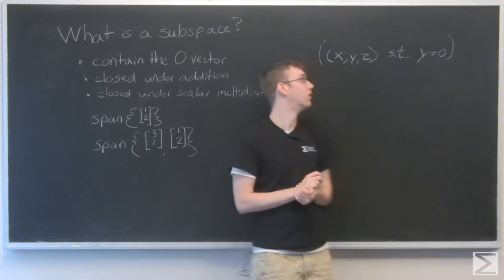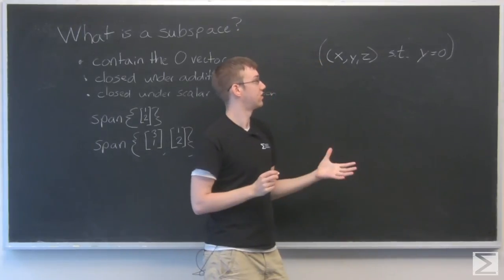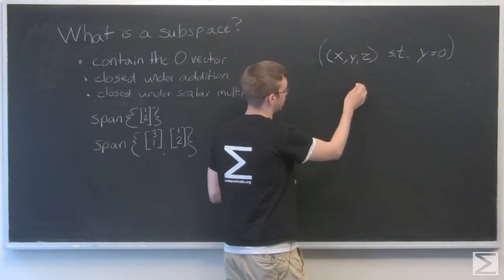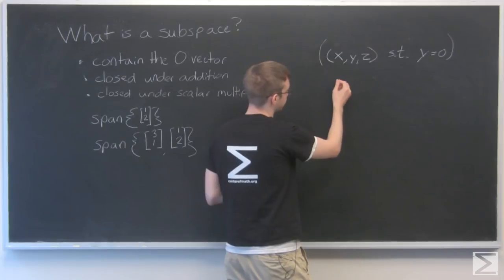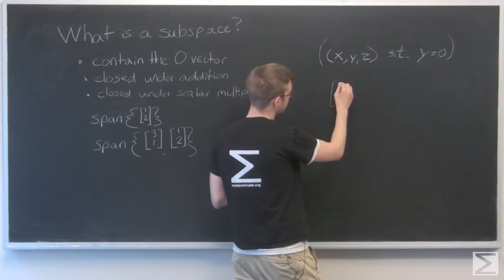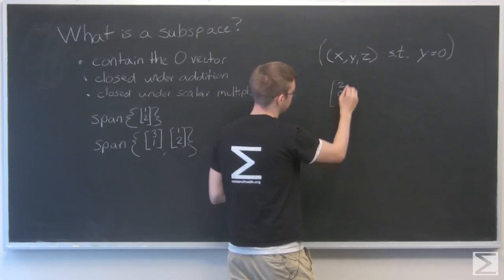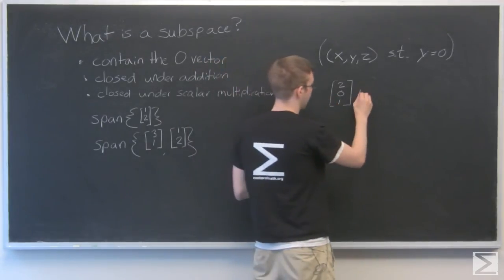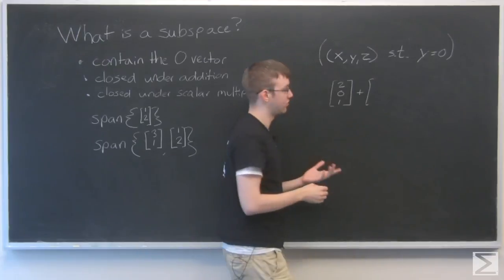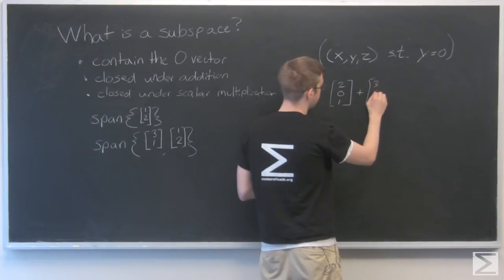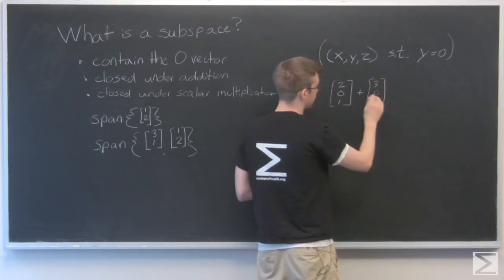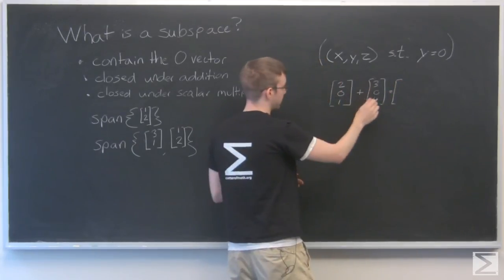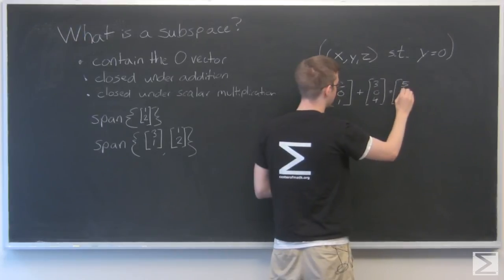Is this closed under addition? Well, if we take two vectors that are part of this subspace, I can pick x and z to be anything. So I'll pick 2, 0, 1, and this is part of that subspace because y is 0. Add it to literally anything else. I can choose 3, 0, 4. That's, again, part of it. And if I add them, no matter what values I picked, y is still going to be 0.